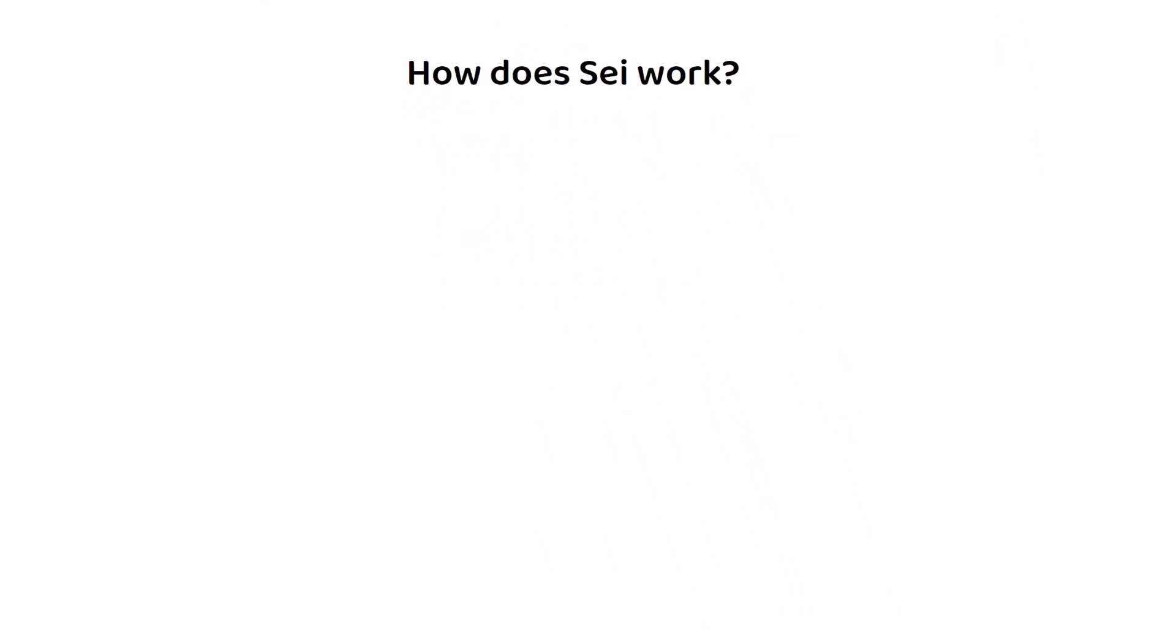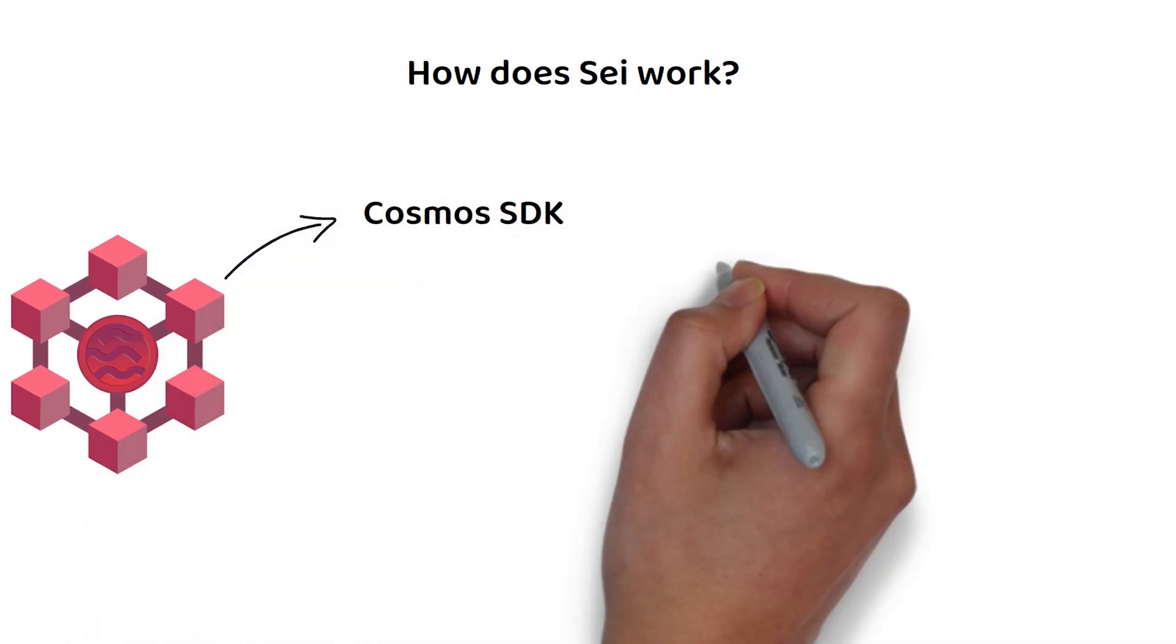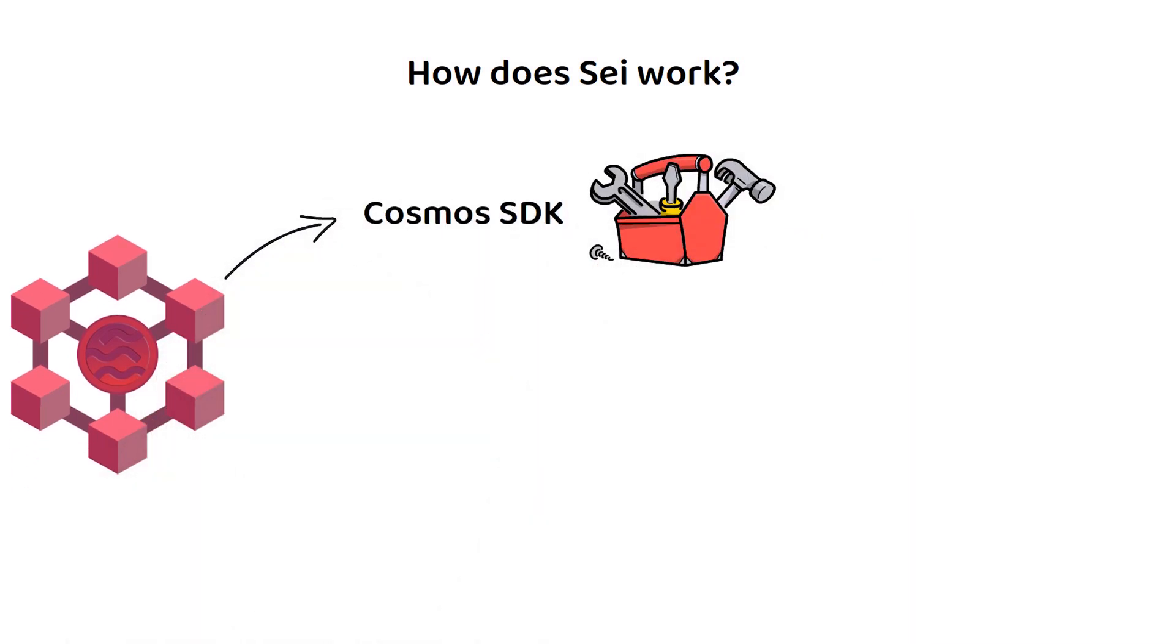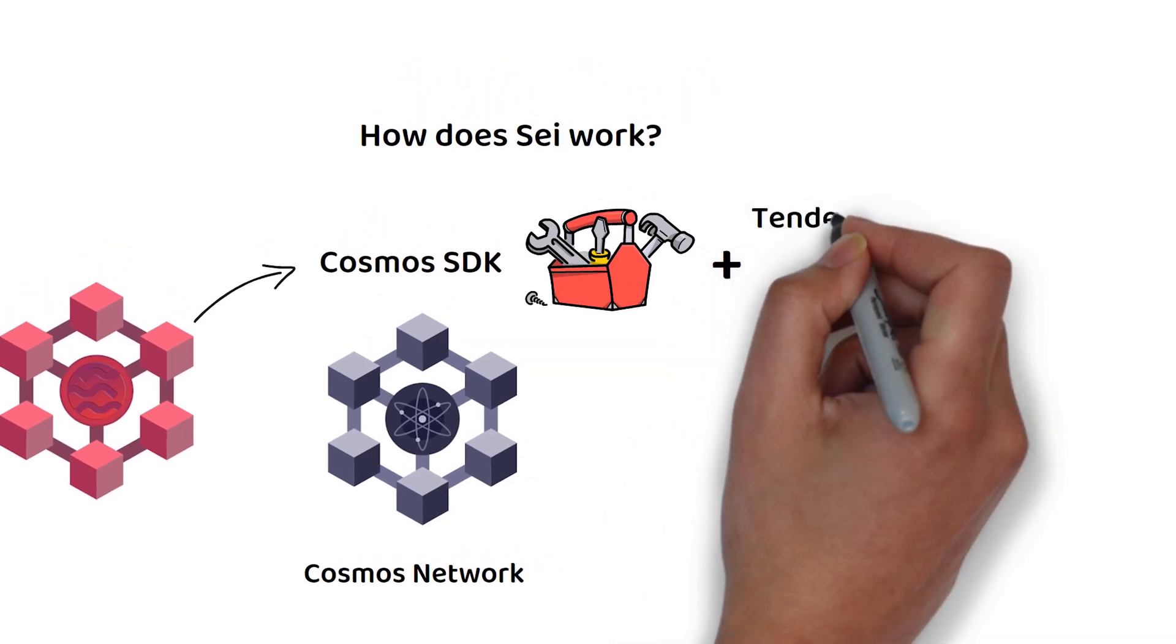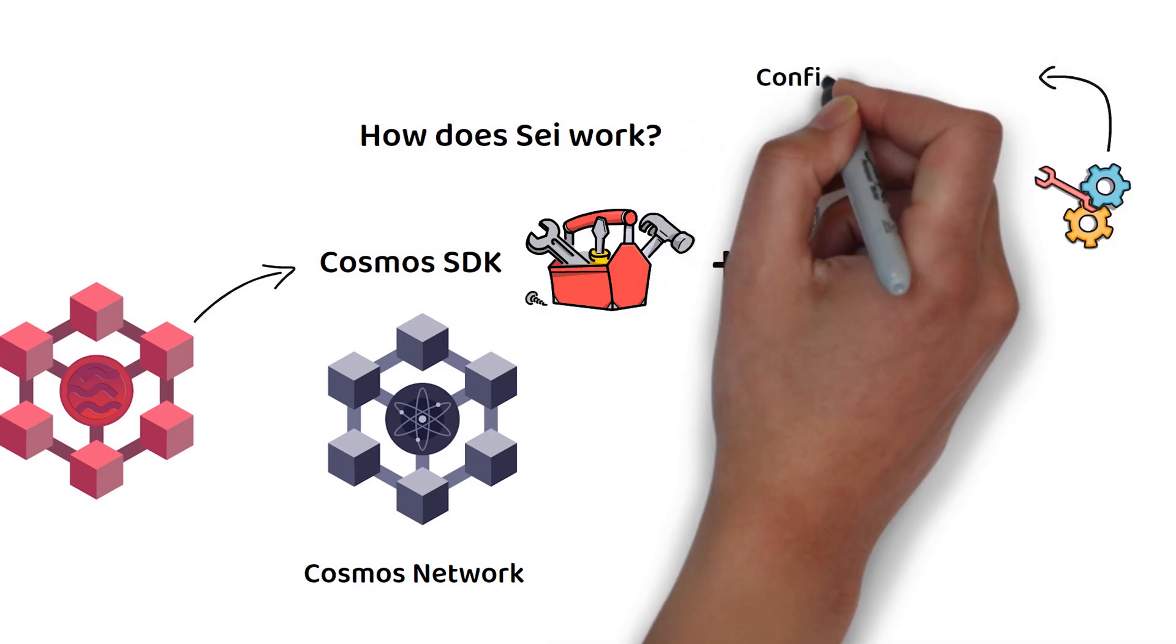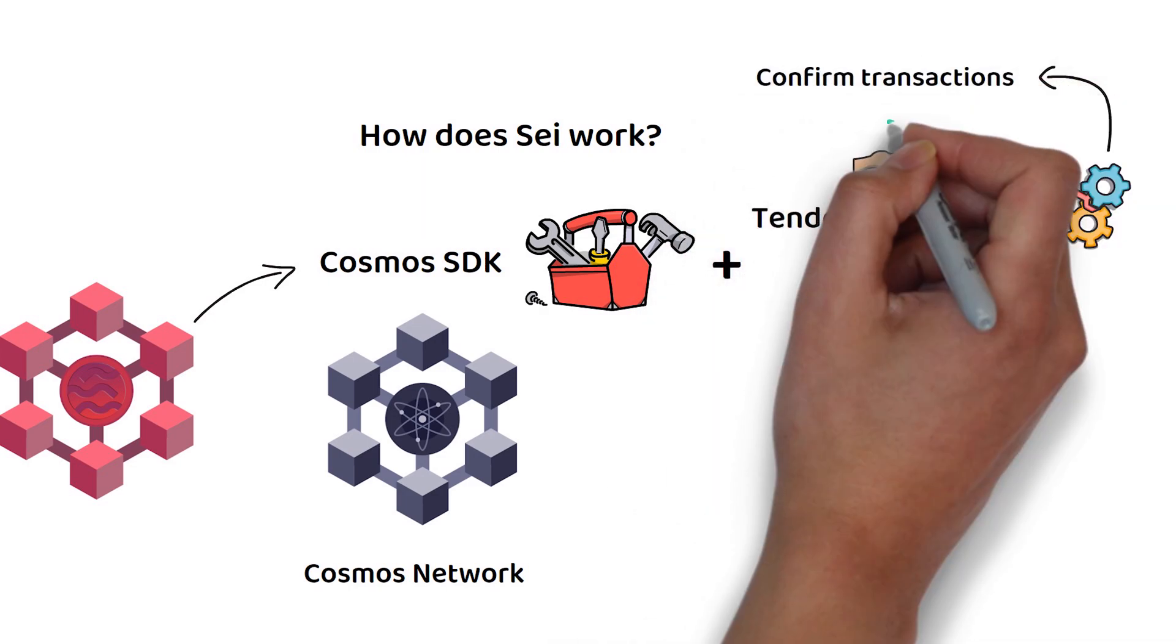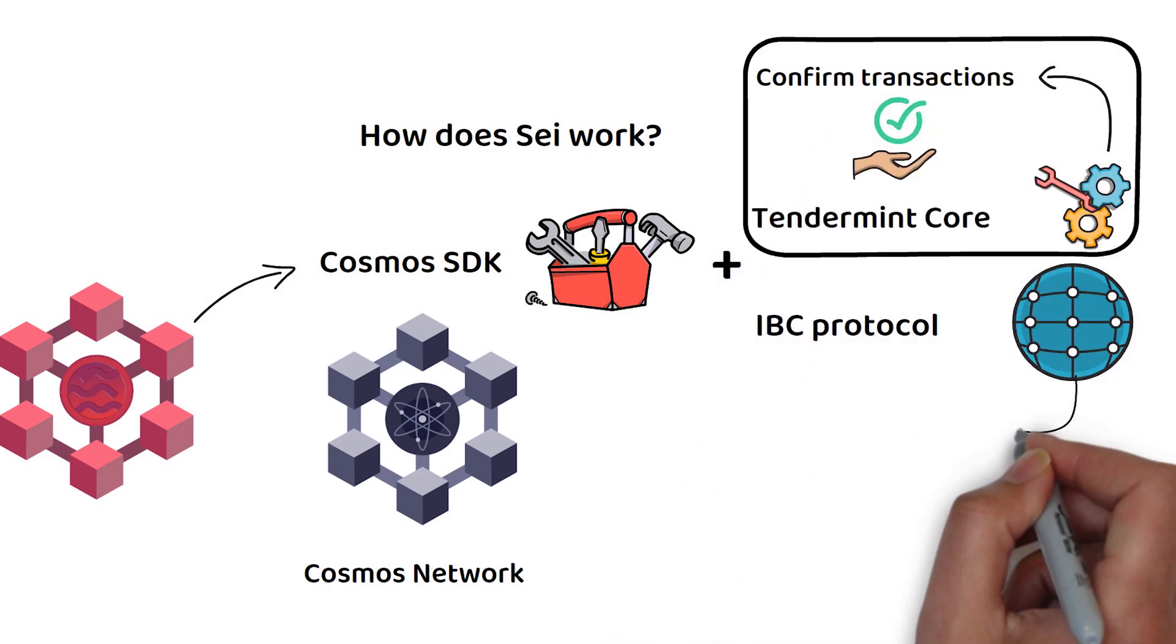SAI was built using the Cosmos SDK. To recap quickly, all platforms and products on the Cosmos network are built using the Cosmos Software Development Kit or SDK for short. Platforms built using the SDK will use Tendermint Core as their consensus mechanism to confirm their transactions and will have the option for the inter-blockchain protocol to be enabled, which makes the platform interoperable with all other IPC-enabled platforms.